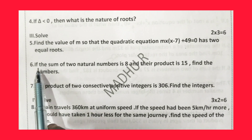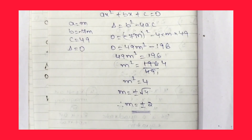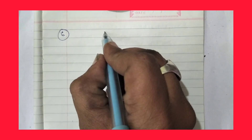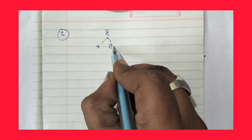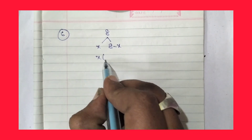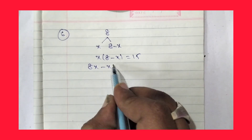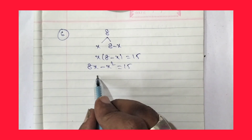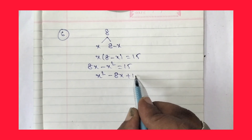Now let us move for question number 6. If the sum of two natural numbers is 8 and their product is 15, find the numbers. Let one number be x; then the other is 8 - x. Their product: x(8 - x) = 15, so 8x - x² = 15, giving x² - 8x + 15 = 0.